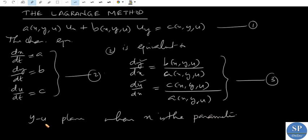It follows that the set of solutions is determined by two initial conditions. Therefore, the set of all solutions of this system (2) forms a two-parameter set of curves.